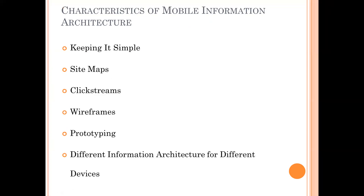When it comes to the characteristics of mobile information architecture, there are about six main characteristics: keeping it simple, site maps, click streams, wireframes, prototyping, and having different information architecture for different mobile devices.